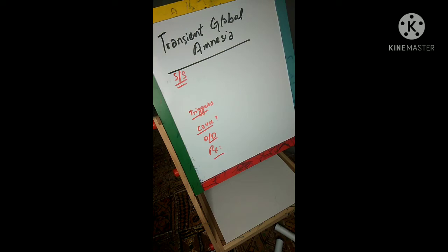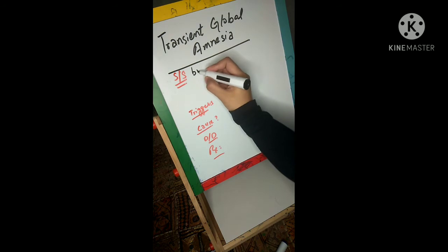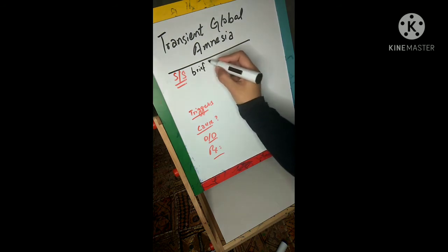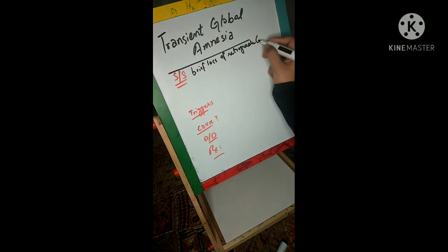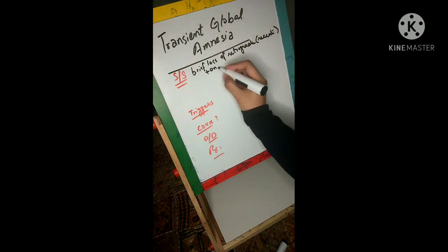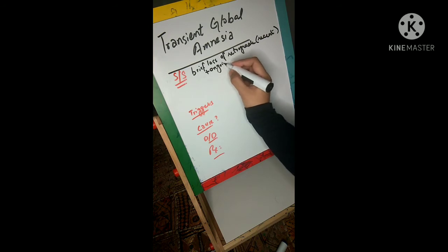So what is TGA or transient global amnesia? In this condition, there is brief loss of retrograde memory—the memory of recent events—and there is also ongoing anterograde amnesia. In simple words, a person forgets recent events and is unable to make new memories of ongoing events.